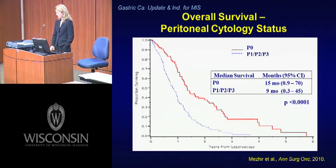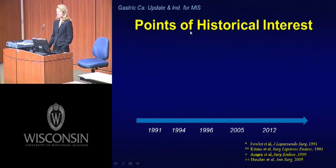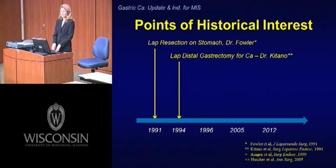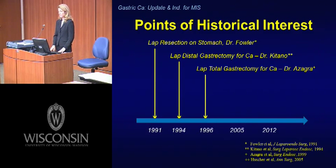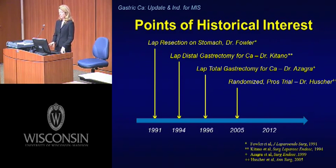What are the indications for minimally invasive approaches for gastric cancer in resectable patients? The first laparoscopic resection for a benign tumor was reported by Dr. Dennis Fowler in 1991. The first laparoscopic distal gastrectomy with lymph node dissection for cancer was reported by Professor Kitano from Japan in 1994. In 1996, the first laparoscopic total gastrectomy with D2 lymph node dissection was performed by Dr. Izagra in South America. The first randomized prospective study was published in 2005 by Dr. Heuscher from Italy — perhaps the landmark paper for gastric cancer in the West.